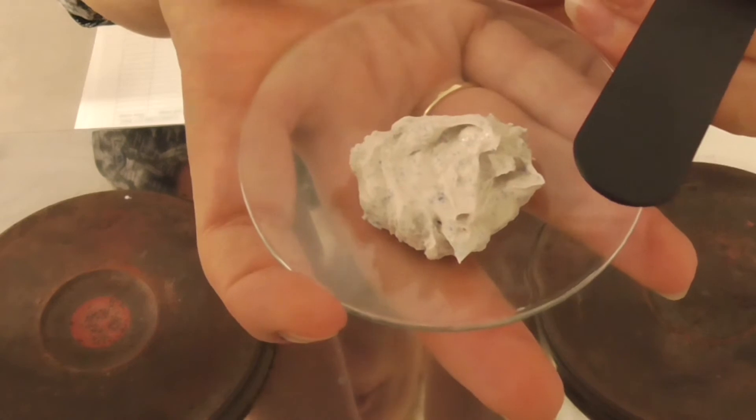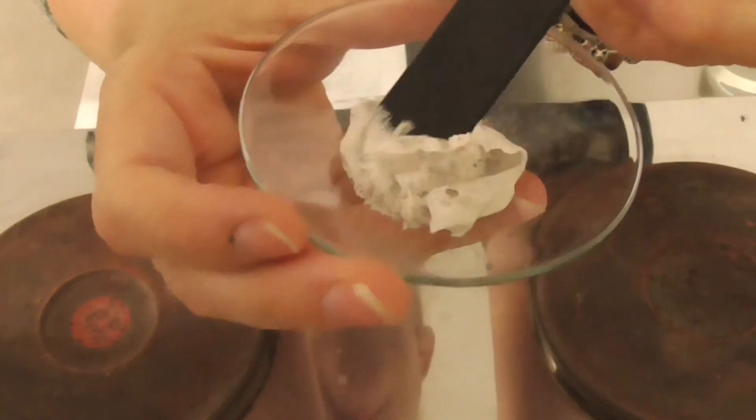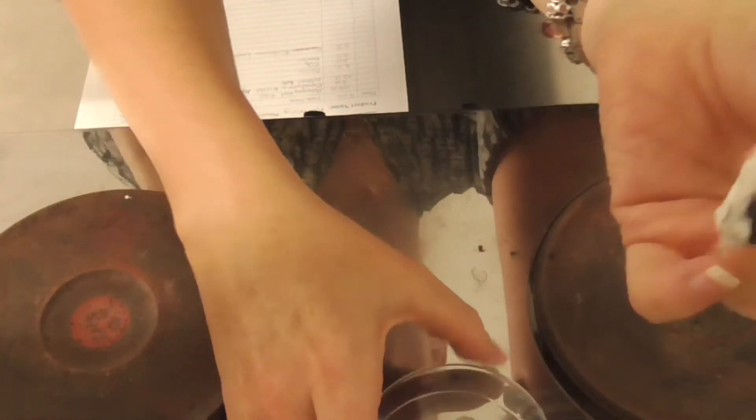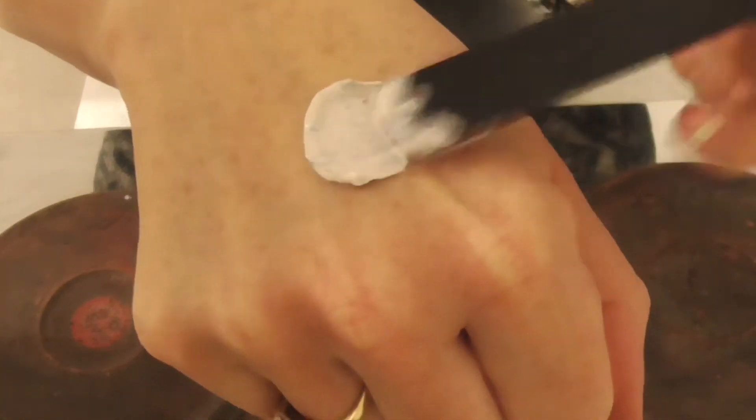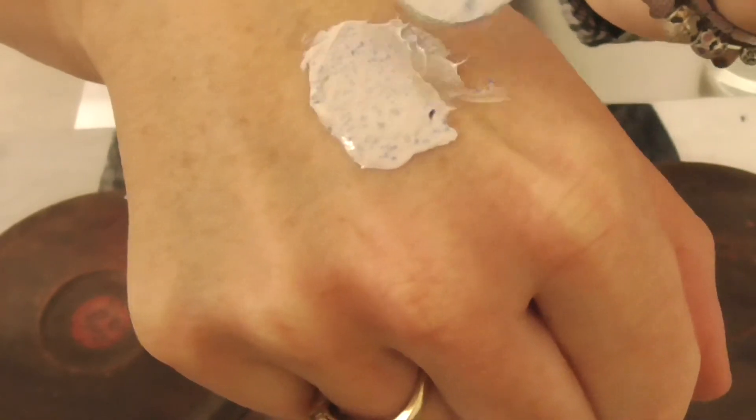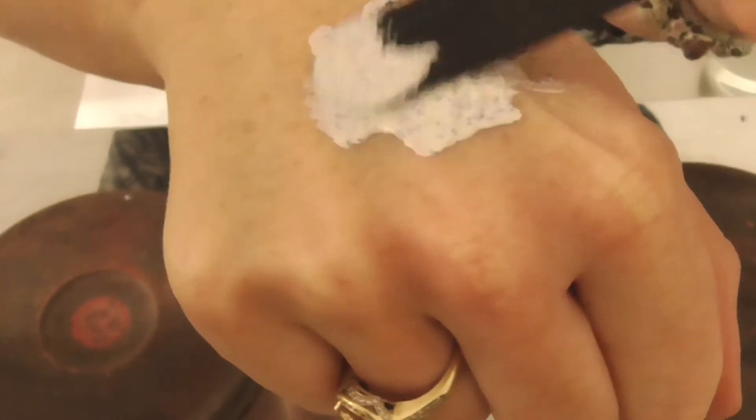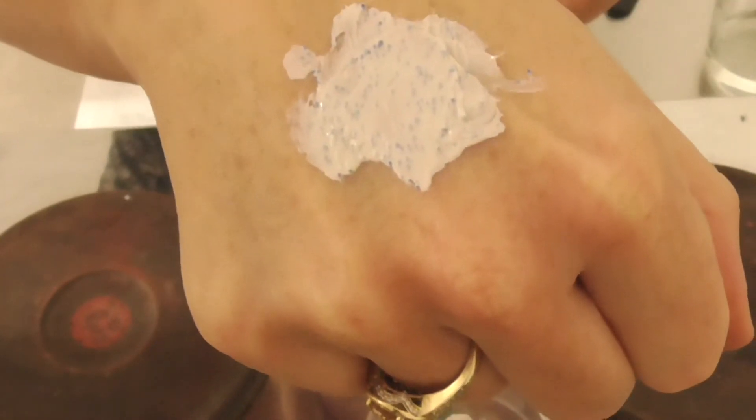Here is the product we're going to make today and you might say what is a warming mask? Well, this is a paste-like product that gets applied to the skin and you can see it's got some really attractive blue scrubby particles in there and it has a very good paste mask-like consistency.